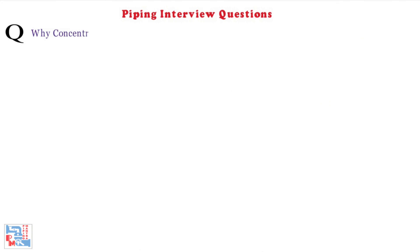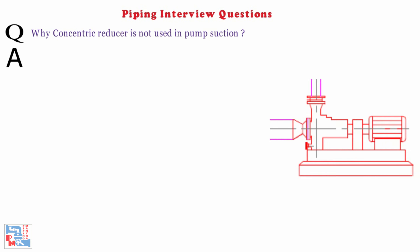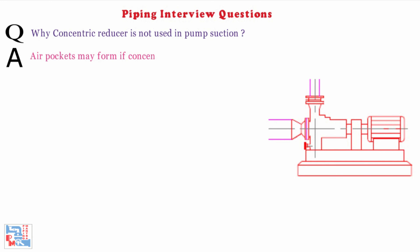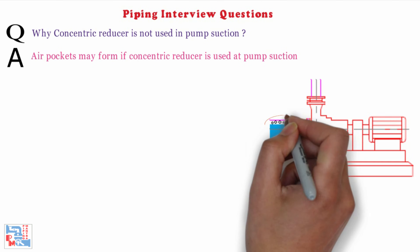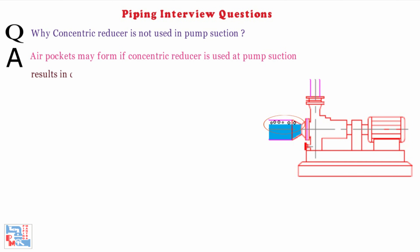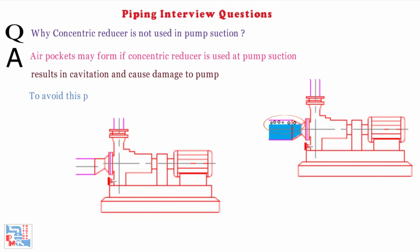Next, why is a concentric reducer not used in pump suction? Air pockets may form if a concentric reducer is used at pump suction, which results in cavitation and may cause damage to the pump. To avoid this problem, an eccentric reducer with flat side up (FSU) is used in pump suction.